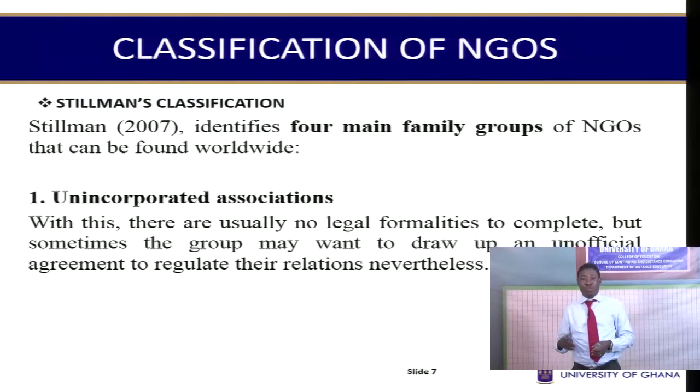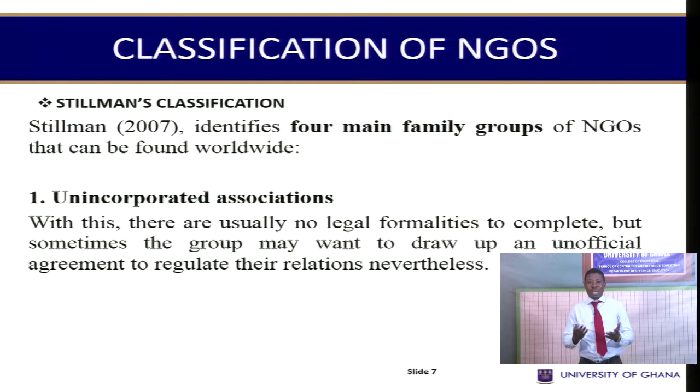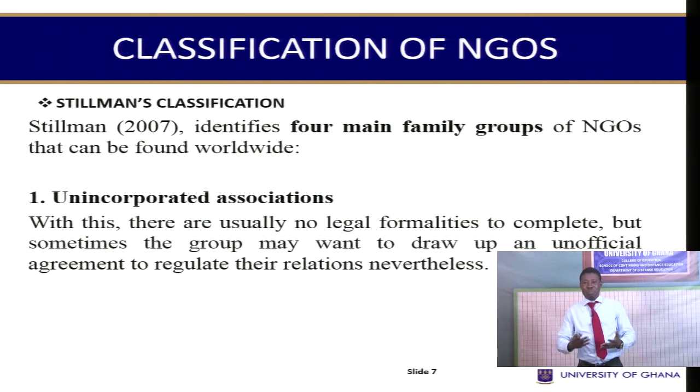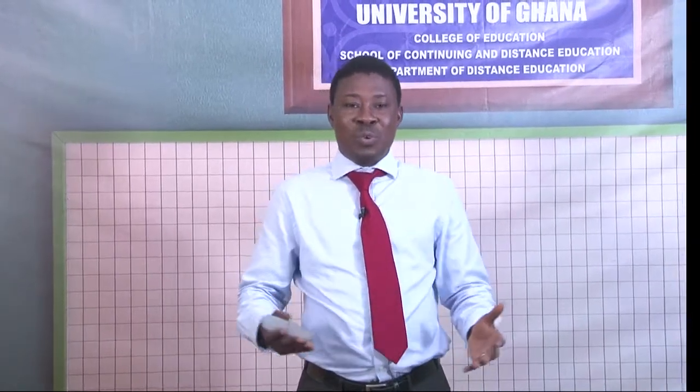Stillman also has his own classification, grouping NGOs into four main families. The first he calls unincorporated associations — associations formed in the community that are not registered. Examples include a women's group or a Barber's Association that meets to discuss common interests. They don't register; there are no legal formalities to complete. They are simply a group of people with common interests.